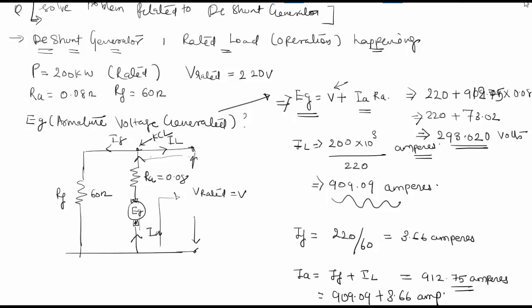In this question there was no brush voltage drop. If a brush voltage drop of around 2 volts (EB) were given in the question, it would need to be added to the EG equation. KVL was applied to the circuit and KCL gave the armature current IA. This was a straightforward question and the answer has been cross-checked for correctness.